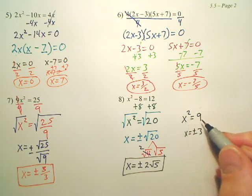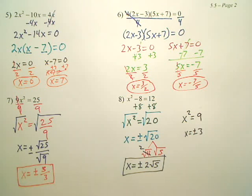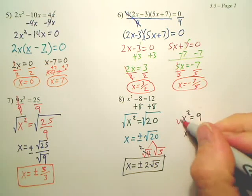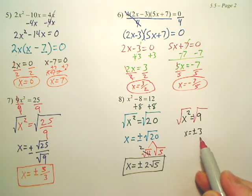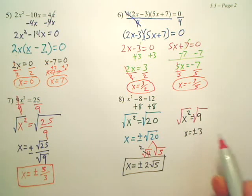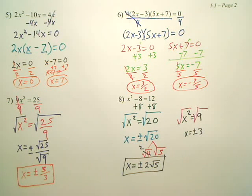Whenever you square root both sides to solve it, you need to put a plus or minus. Because if you think about something more familiar to you, like this, when you square root both, you get 3, but you need a plus or minus again because of the square rooting idea.